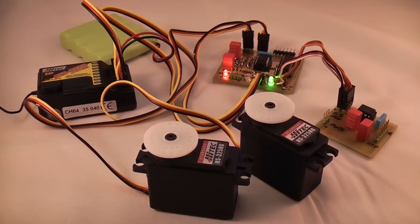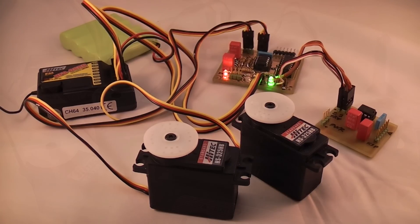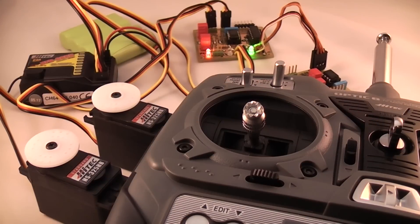Since the servo switcher is effectively passive, you can use it during software development and testing and then simply remove it and the radio receiver from the finished autonomous vehicle.